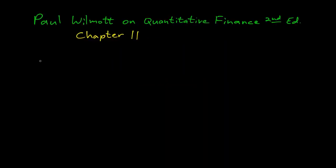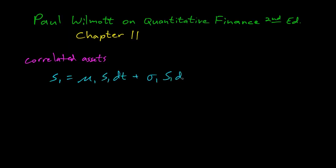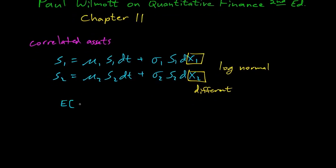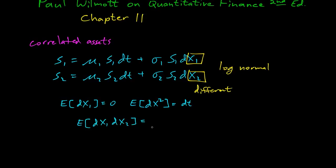What if you have correlated assets? That means you have S1 with drift μ1 and volatility σ1 dX1, and S2 with its own drift and σ2 dX2. Both are log-normal, but X1 and X2 are different sources of randomness. The usual expectations hold: E[dX] = 0, E[dX²] = dt, but now E[dX1·dX2] = ρ dt, where ρ is the correlation coefficient telling us how much these two sources of randomness are correlated.